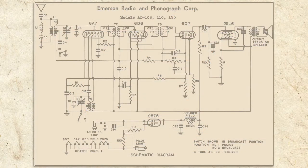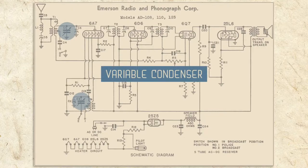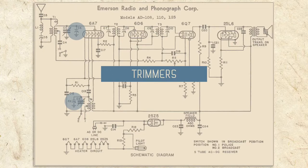On the schematic, the large variable capacitors used for general tuning are shown as capacitors with arrows going through them. The two smaller variable capacitors, called trimmers, are shown with curved arrows as one of the conductors.